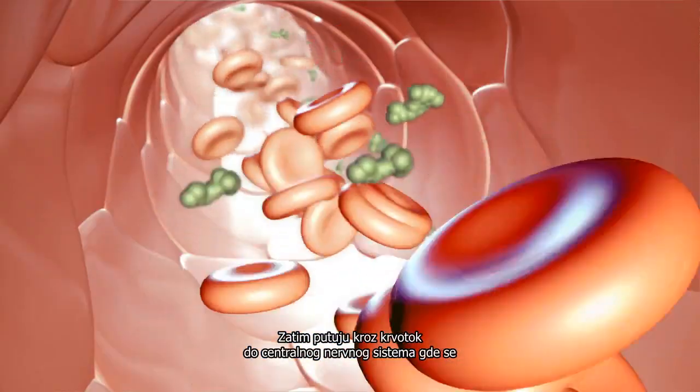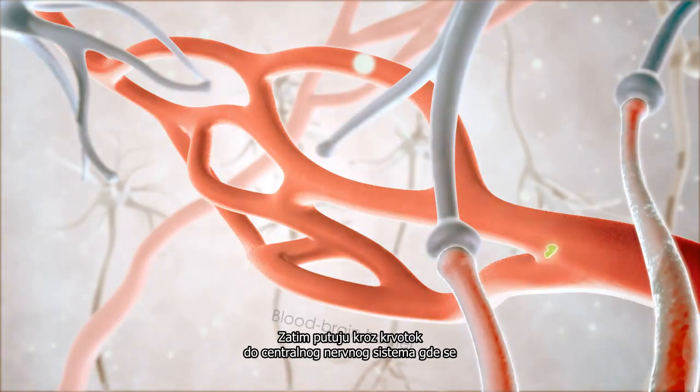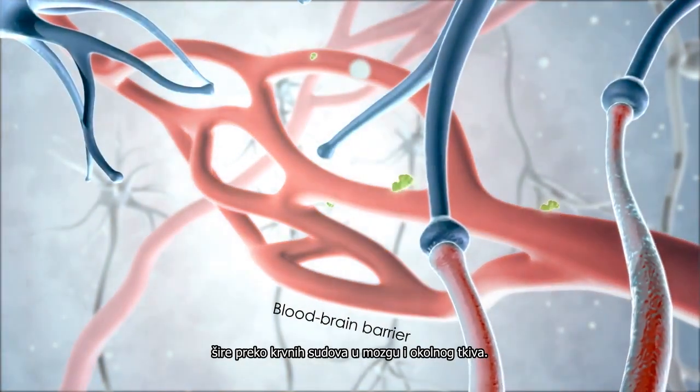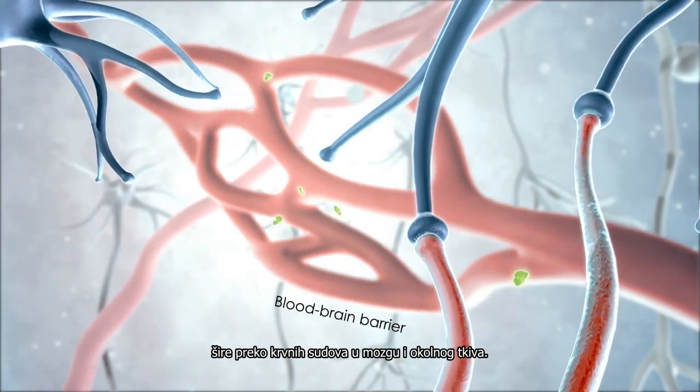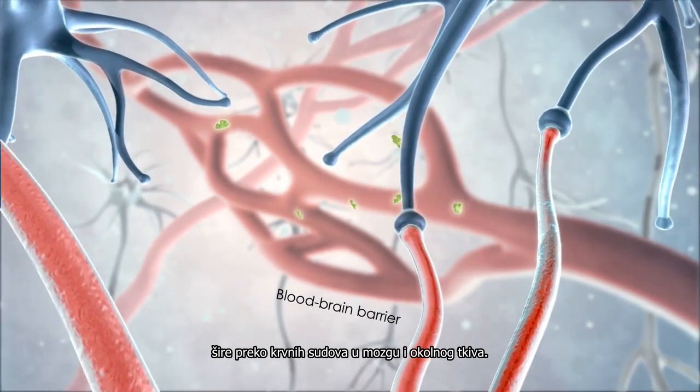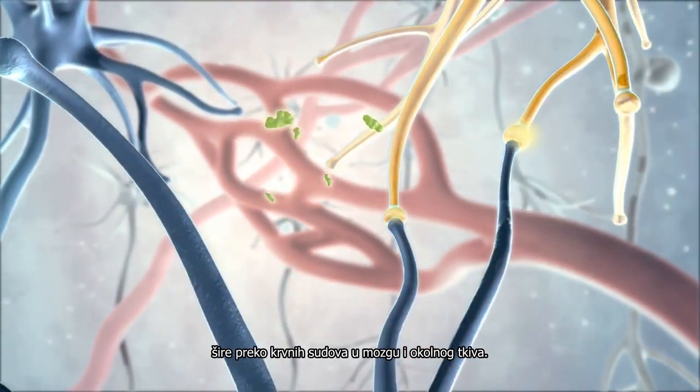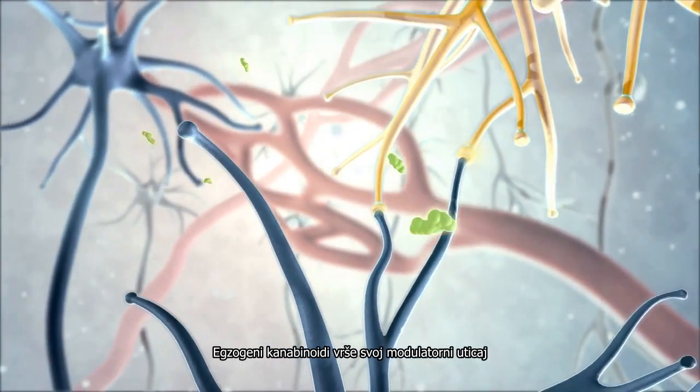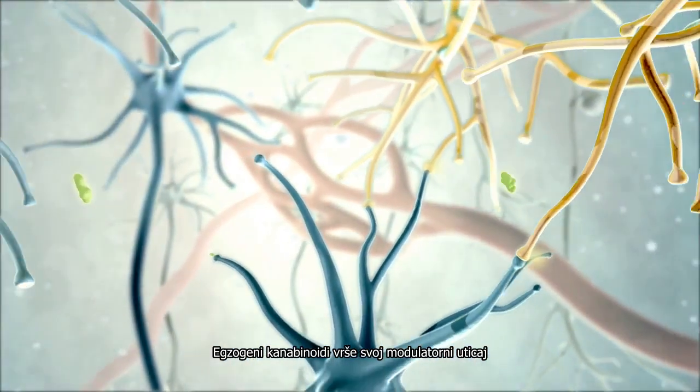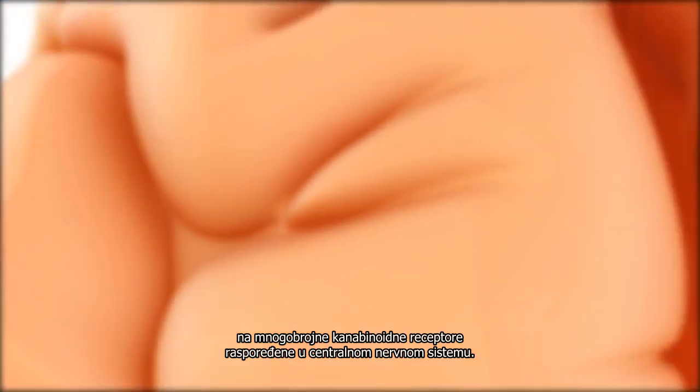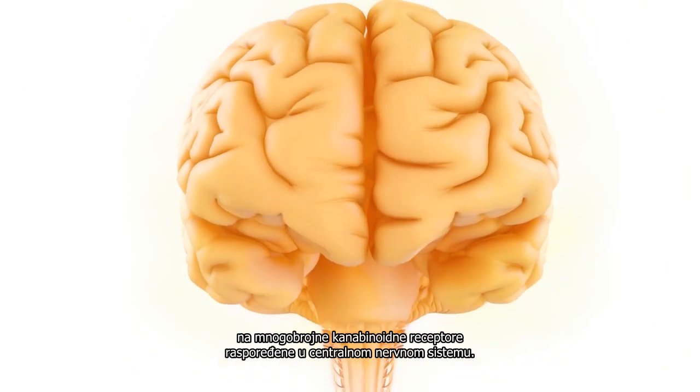They then travel through the bloodstream towards the CNS where they diffuse across the blood-brain barrier and into the surrounding tissues of the brain and spinal cord. Exogenous cannabinoids exert their modulatory effects upon the abundant cannabinoid receptors distributed throughout the CNS.